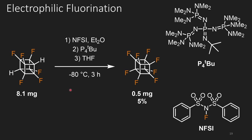The last step was to deprotonate those CH positions and trap them with an electrophilic fluorine source. In this case they used P4-TBU, a bulky non-nucleophilic base. However, using this methodology they were only able to get 5% conversion, giving them half a milligram of perfluorocubane. Even so, this is still quite an impressive feat.